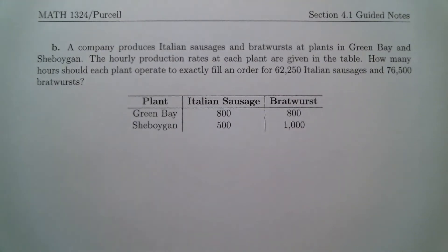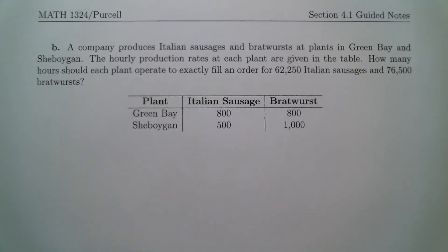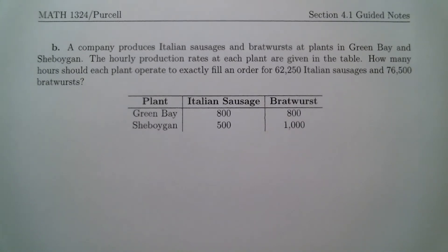In example B, a company produces Italian sausages and bratwursts at plants in Green Bay and Sheboygan. The hourly production rates at each plant are given in the table. How many hours should each plant operate to exactly fill an order for 62,250 Italian sausages and 76,500 bratwursts?